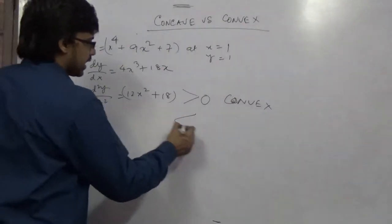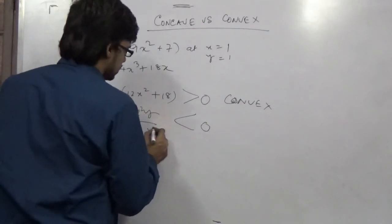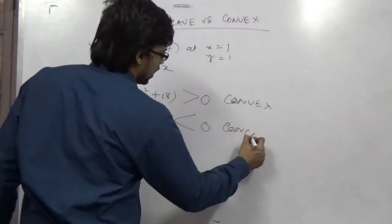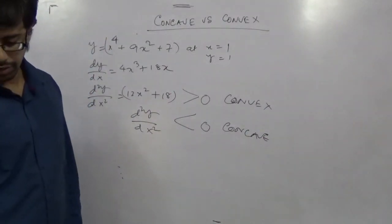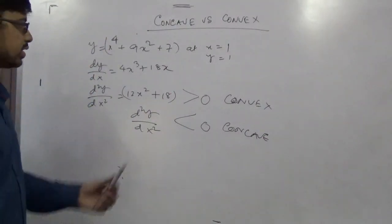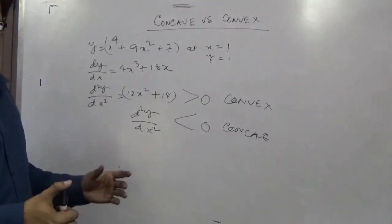And if the second order derivative like d2y dx squared comes in negative, this has to be a concave curve. So this is a very basic pattern of finding out the concavity and convexity. Just put in a second order derivative and check.